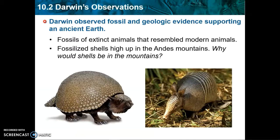Darwin also made important fossil observations. He noticed that fossils of extinct animals were pretty similar to some modern species. He famously found fossils of an extinct armadillo relative — the glyptodon — and noticed it looked very similar to a modern armadillo. He also found fossilized seashells high in the Andes Mountains. Since there's no ocean in the Andes today, that was evidence of massive environmental change over time, suggesting that species living in that environment had probably changed as well.